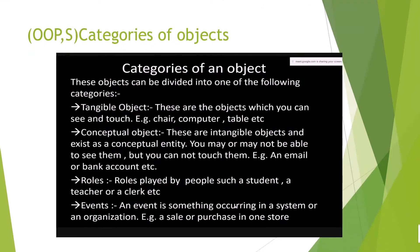There are different categories of objects. Real world objects can be divided into tangible objects — which we can feel and see — such as a chair. Now coming to software, we create conceptual objects. We are making a concept; we cannot see or touch them. These are intelligible objects — existing conceptual entities. You may or may not be able to see them, but you can test them, though you cannot touch them.